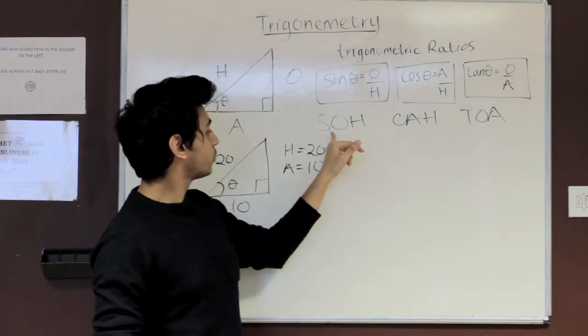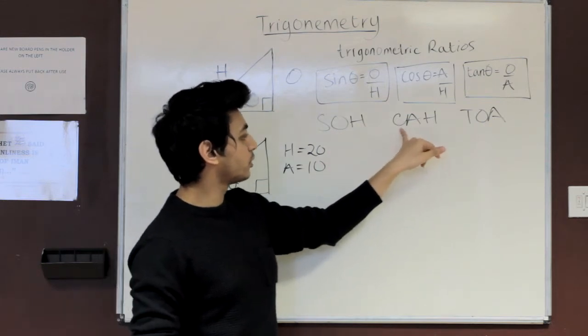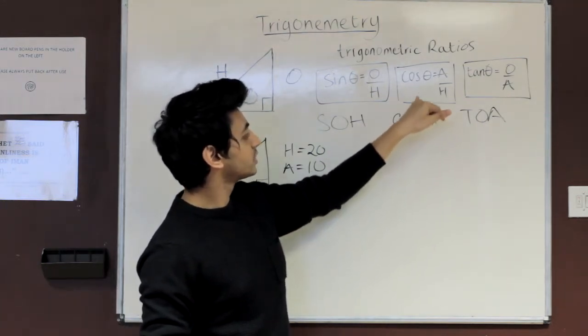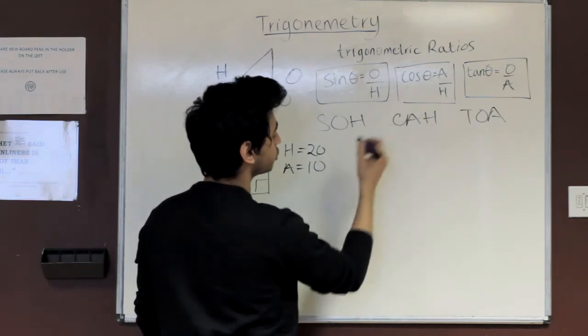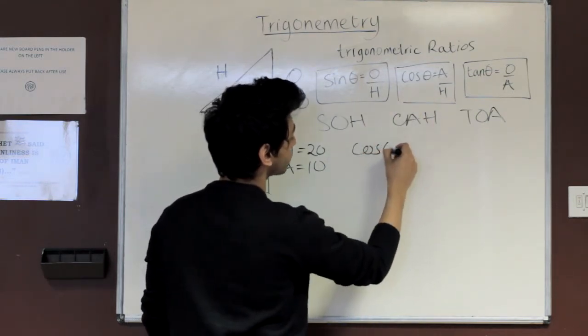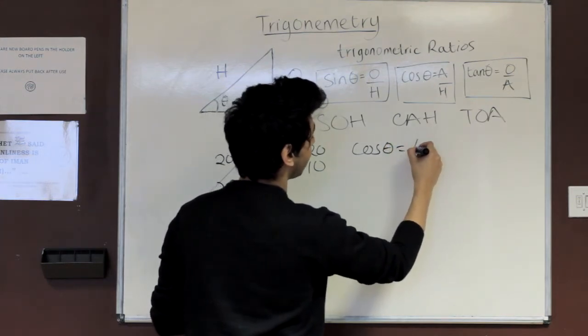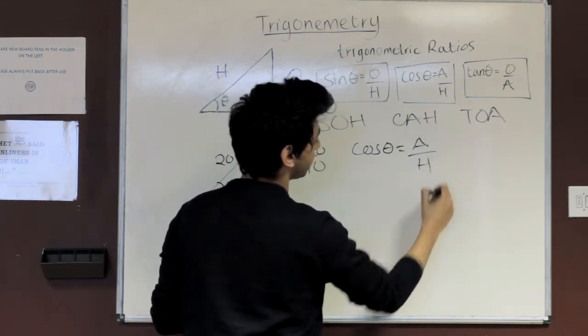So that means we're going to be using the corresponding SOHCAHTOA word that uses these two. As you can see, SOH we don't have an A and an H. With CAH we have an A and an H. So that would suggest that we use this ratio, the cos ratio.